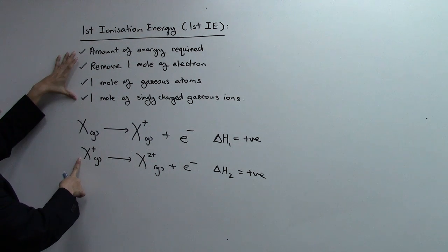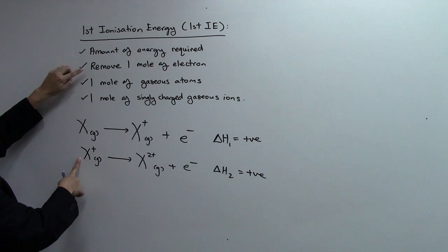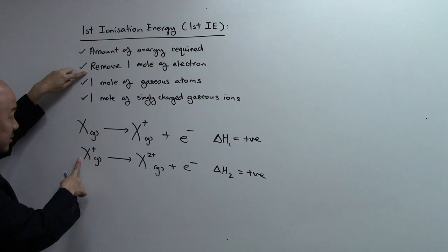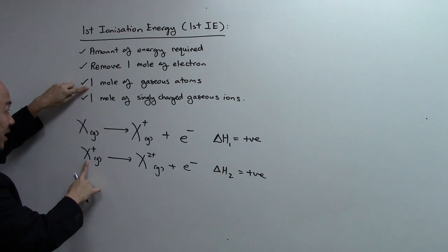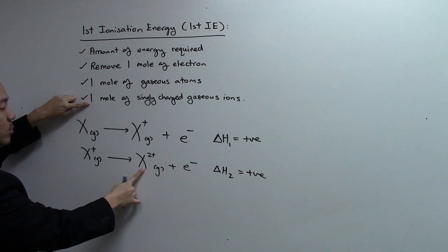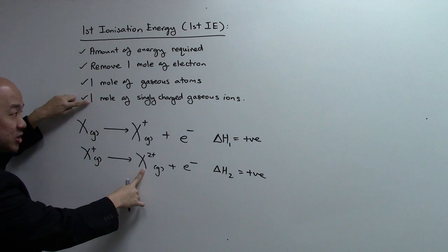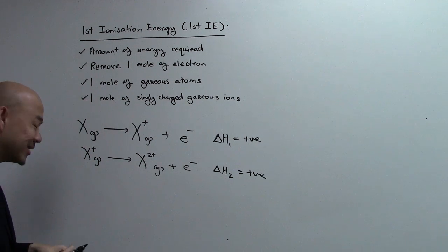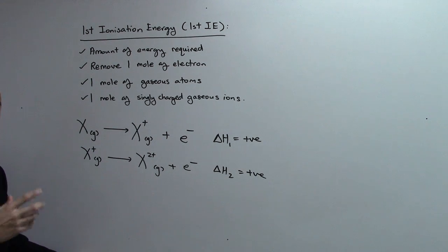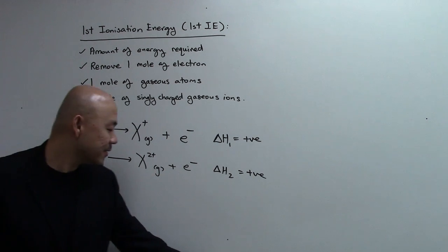Now, for this, it will be the amount of energy required to remove one mole of electrons from one mole of singly charged gaseous ions to produce one mole of doubly charged gaseous ions. See what we are doing over here? So, from there, you can do also your third IE, fourth IE.